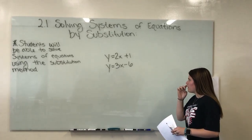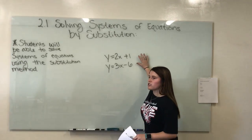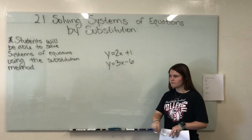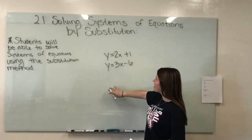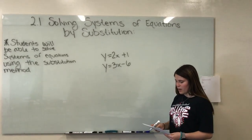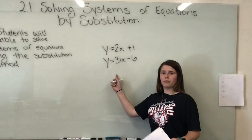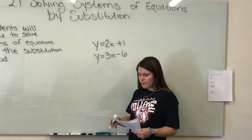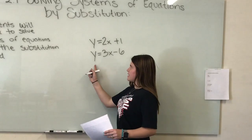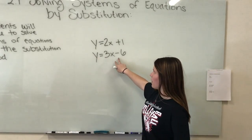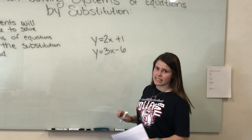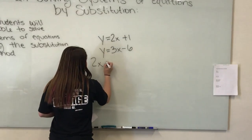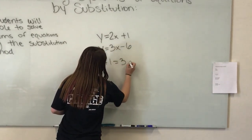I put up these two systems of equations to explain the basic process of substitution. I have y equals 2x plus 1 and y equals 3x minus 6. You're going to want to get a variable by itself, and these two already have that — the y is already isolated. Because both expressions equal y, we can set them equal to each other: 2x plus 1 equals 3x minus 6.